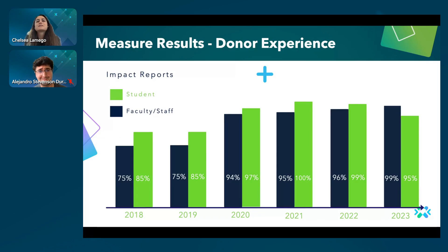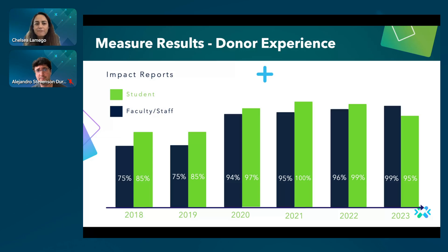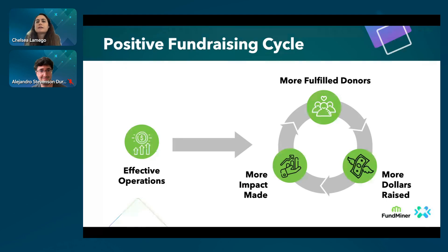Speaking of donors and the donor experience: once you are using all of your funds and have great processes, procedures, and systems in place, you can also share impact back with donors. In 2018, one organization was only able to collect about 75% of reports from faculty and staff and 85% of impact reports from students. Today, with automated systems and processes like Fundminer, they are collecting and sending 99% of impact reports from faculty and staff and 95% from students. At the end of the day, we want our donors to have a positive and meaningful experience — and when we do a good job of stewarding, using, and reporting on their funds, they will feel more fulfilled, will continue giving, and our organization is able to make a bigger impact.